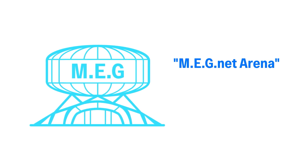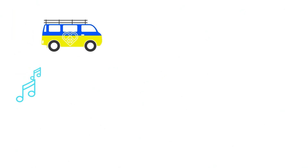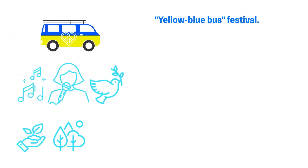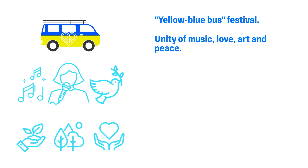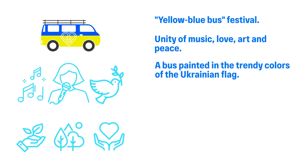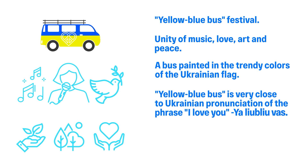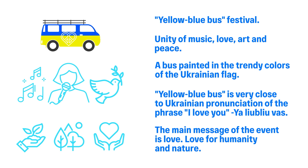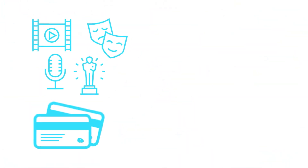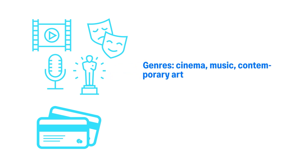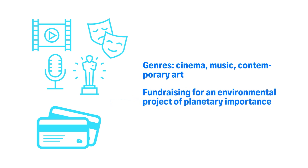Creation and organization of the festival Yellow-Blue Bus. Today, Ukraine is a symbol of freedom and rebirth. The time has come to create a festival of unity of music, love, art, and peace. The symbol of the festival is a bus painted in the colors of the Ukrainian flag. On such buses, visitors will be brought to the venue of the festival. The English name Yellow-Blue Bus is very close to the Russian and Ukrainian pronunciation of the phrase 'I love you' — Я люблю вас. The main message of the event is love for humanity and nature. The format assumes multi-directional genres: cinema, music, contemporary art. One of the missions will be to raise funds for a specific environmental project of planetary importance.